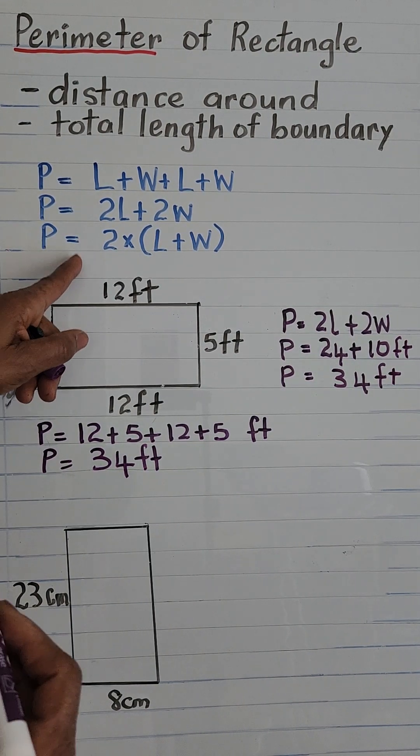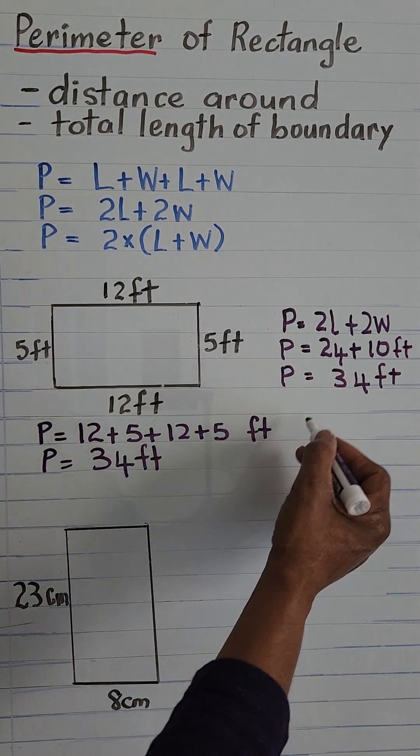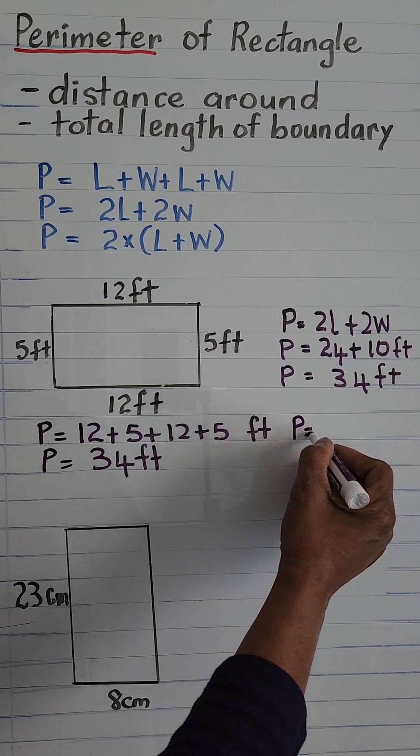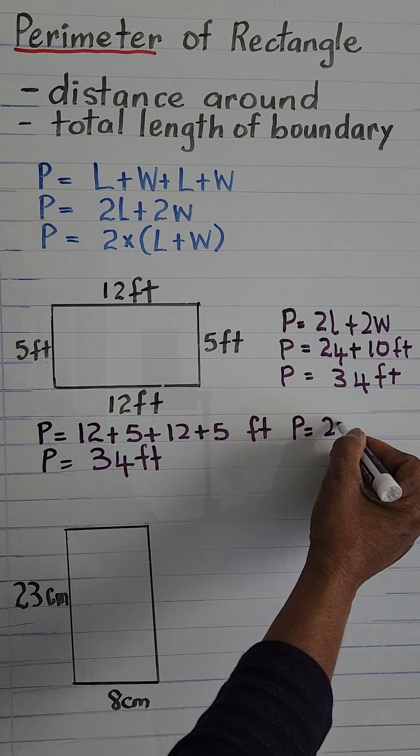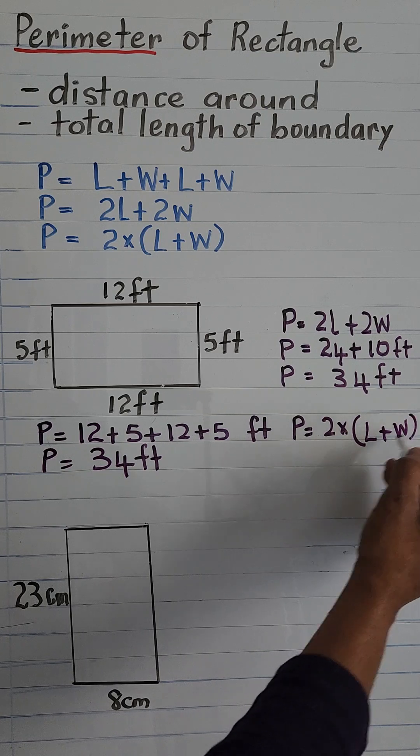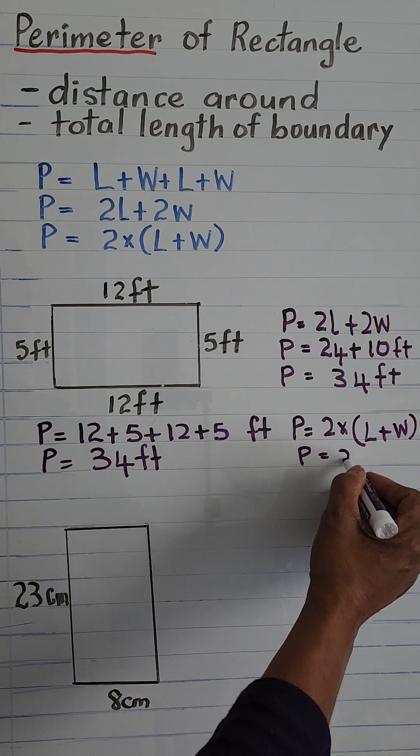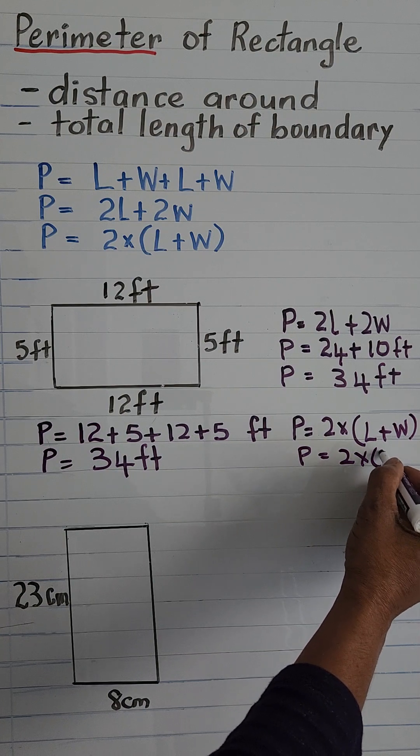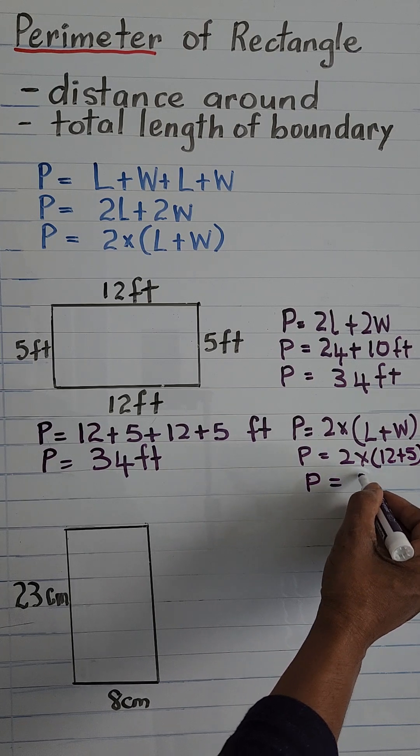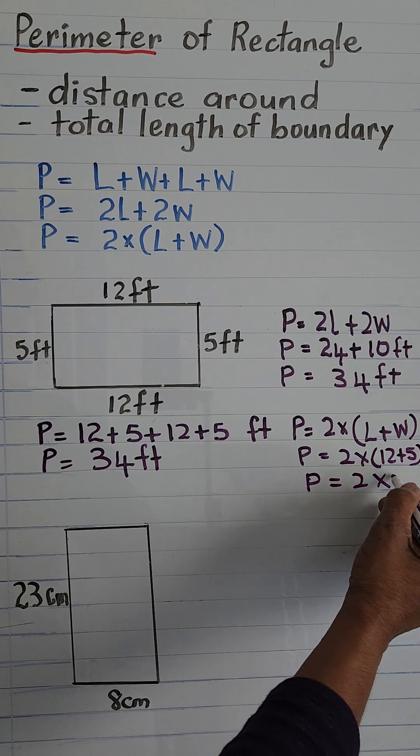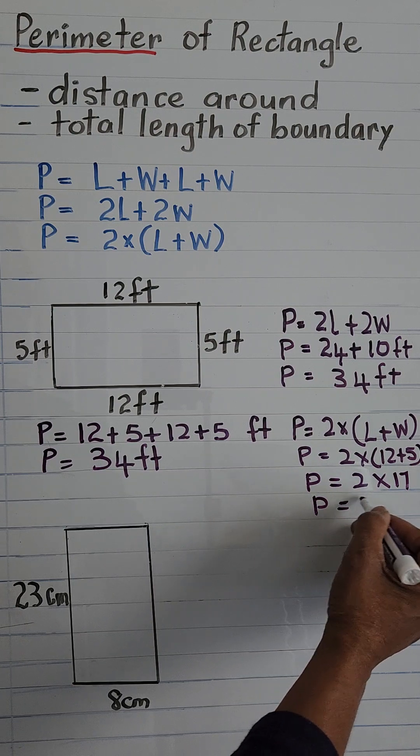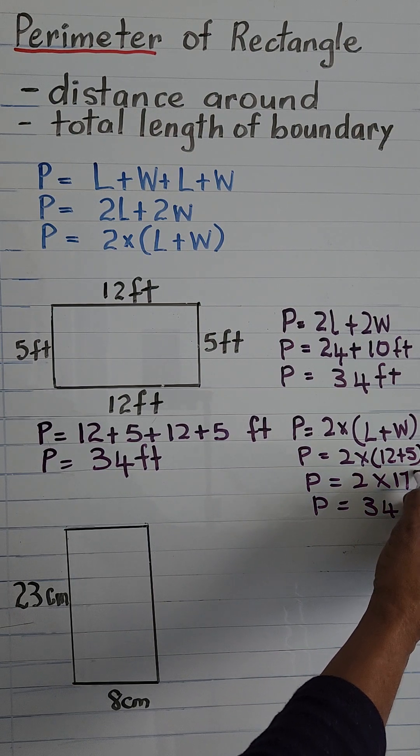And we have another formula we could try, so P is equal to 2 times L plus W. That is P is equal to 2 times 12 plus 5, and P is equal to 2 times 17. P is equal to 34, and that is feet.